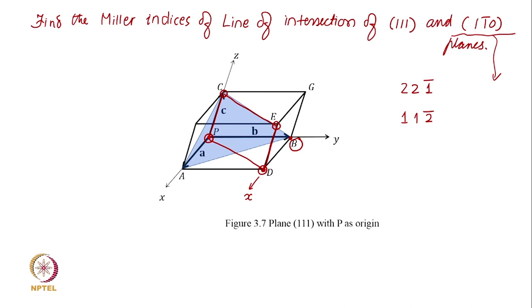This becomes my 1 bar 1, 1 1 bar 1 0 plane. Now, you have to find the line of intersection. So you have to look for points which are common, which are the points which are common.